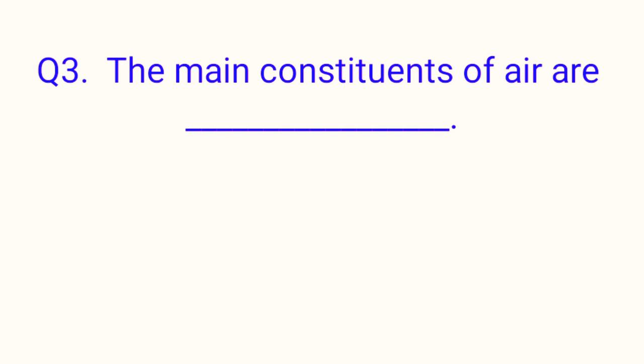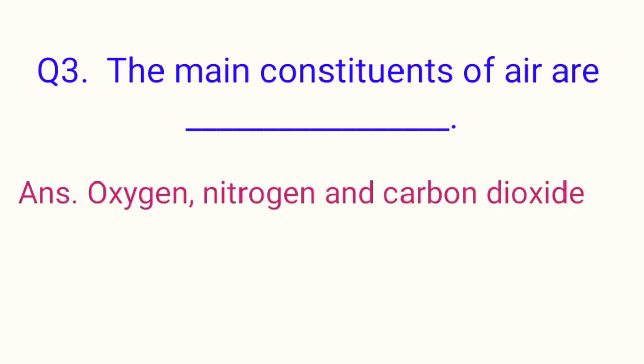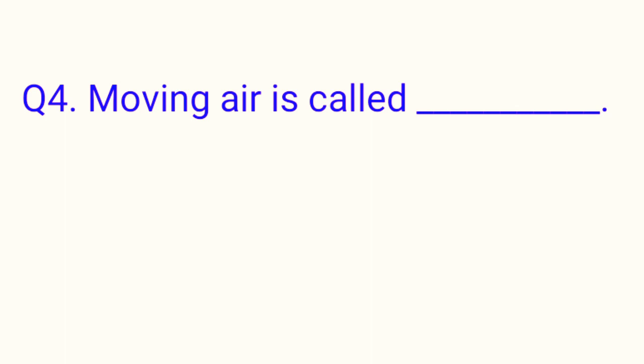Question number three: The main constituents of air are dash. Question number four: Moving air is called dash. Answer is wind. Question number five: Gentle wind is called dash. Answer is breeze.